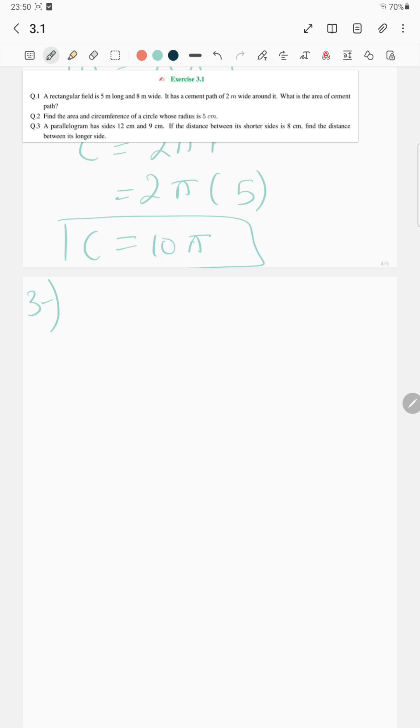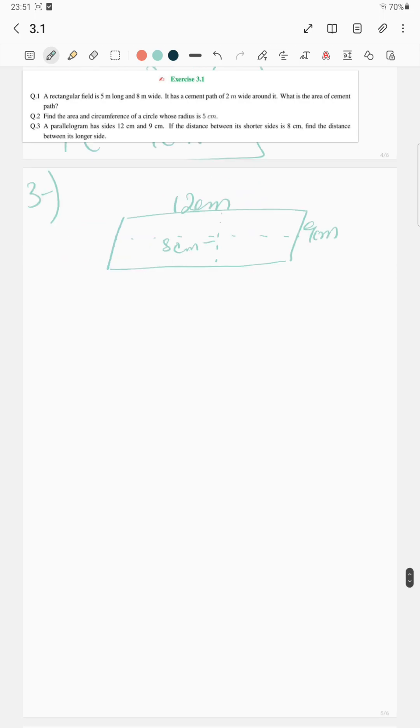A parallelogram has sides 12 centimeter and 9 centimeter. If the distance between its shorter sides is 8 centimeter, find the distance between its longer sides. Okay, so let's pause.